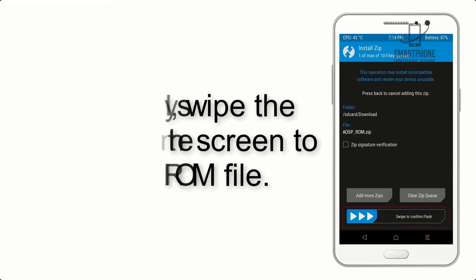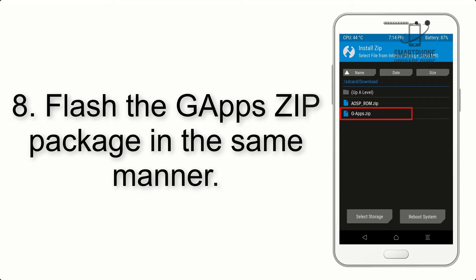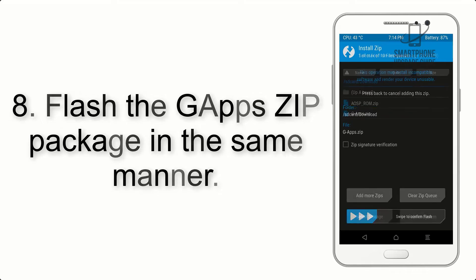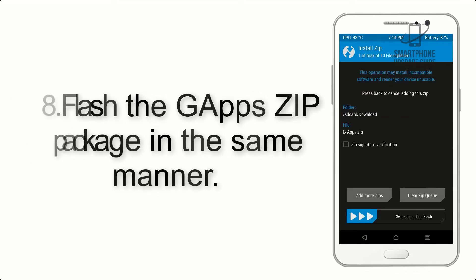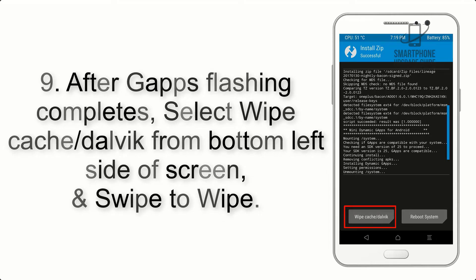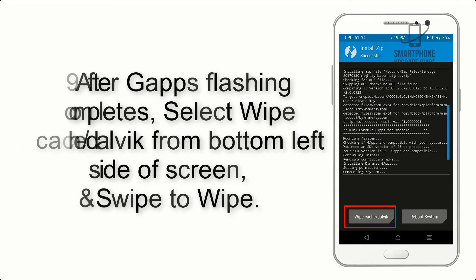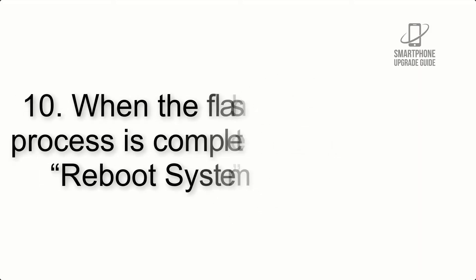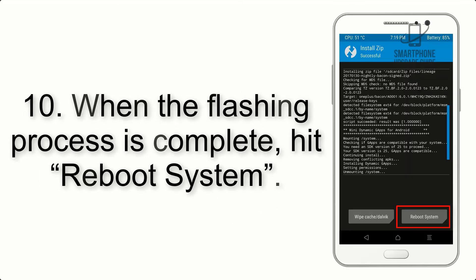Step 7: Swipe the button on the screen to install the ROM file. Step 8: Flash the gapps zip package in the same manner. Step 9: After gapps flashing completes, select Wipe Cache and Dalvik from the bottom left side of the screen and swipe to wipe.